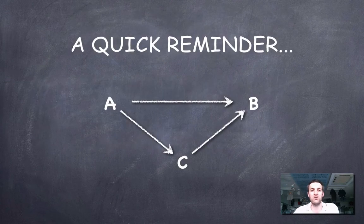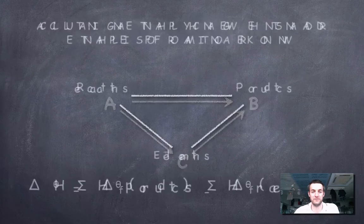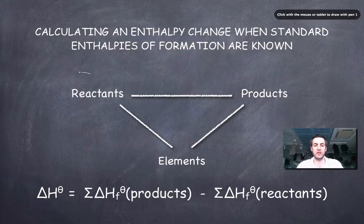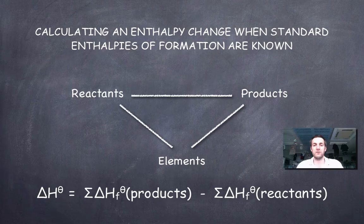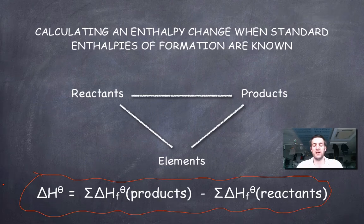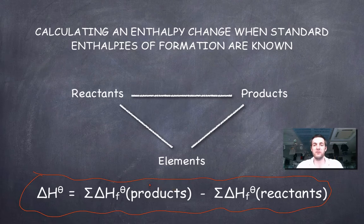Just as a quick reminder of Hess's law: Hess's law says it doesn't matter how we get from A to B, the enthalpy change will always be the same. So for a general reaction where reactants turn into products, if we know the standard enthalpies of formation of the reactants and the products, we can always find the enthalpy change for the process using this formula. However, it would be worthwhile seeing how we can prove that this formula will always work, because if we can do that we've got a better chance of constructing these cycles when we have to.